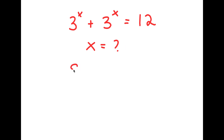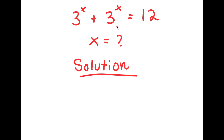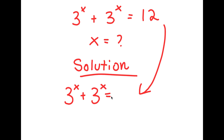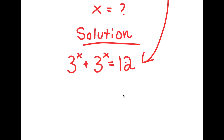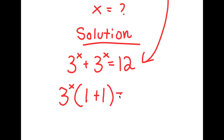So for my solution, I'm going to first start by rewriting my equation here. So I get 3 to the power of x plus 3 to the power of x is equal to 12. And now, on my left-hand side, I'm going to go ahead and factor out 3 to the power of x. So now I get 3 to the power of x times 1 plus 1 is equal to 12.